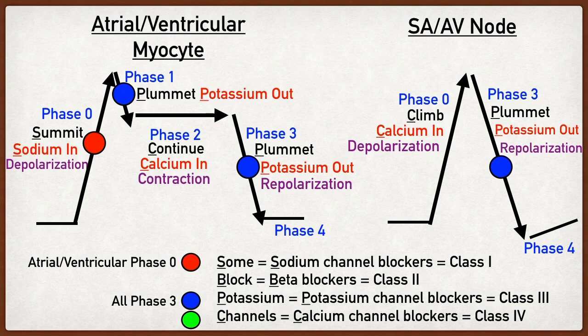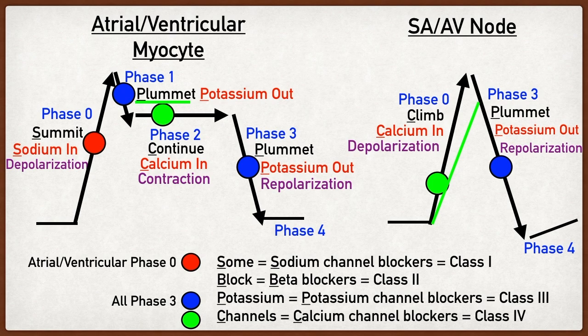Calcium channel blockers are class four. Calcium channels were involved in phase two of the non-pacemaker cardiac myocytes and phase zero of the pacemaker myocytes. In phase two of the non-pacemaker cells, calcium ion channels open, leading to calcium influx and contraction of the atrium and ventricles. Blocking calcium entry decreases cardiac contraction and helps suppress dysrhythmias. Calcium channel blockers also affect the SA node and AV node by preventing calcium influx that would normally depolarize the cell, decreasing automaticity of the SA node and decreasing conduction velocity through the AV node, thereby suppressing tachyarrhythmias.